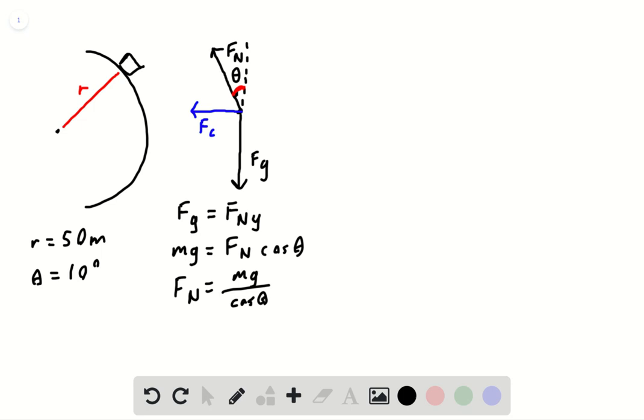Now we use this FN and plug it into the force in the x direction, which will be the sum of the forces in the x direction is equal to centripetal force, and the only force in the x direction is the x component of the normal force. And Fx can be rewritten as FN sine theta equals centripetal force.